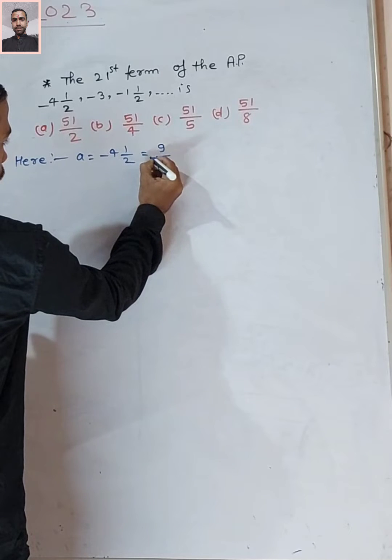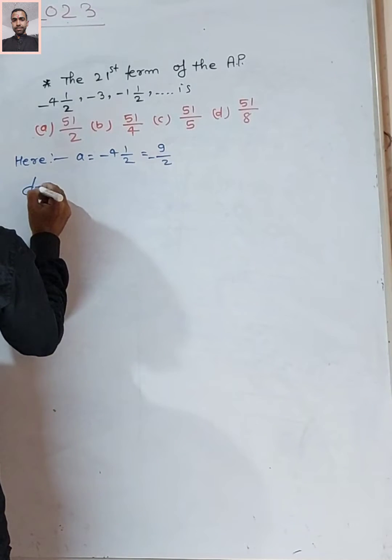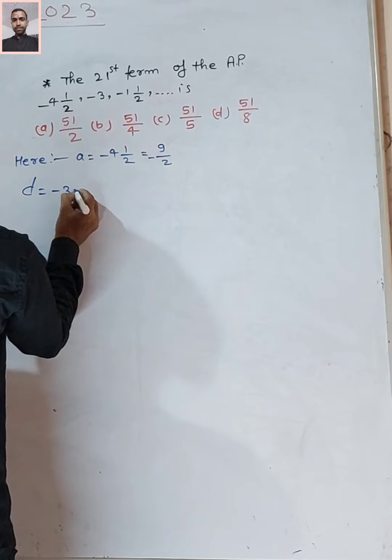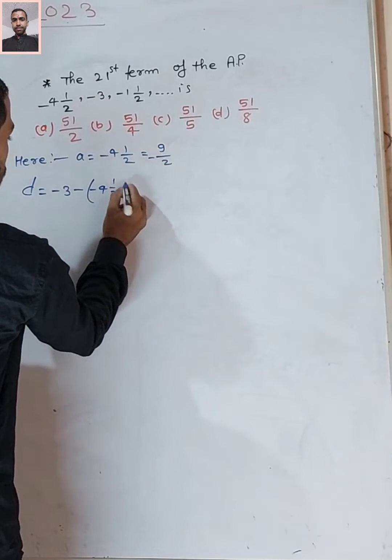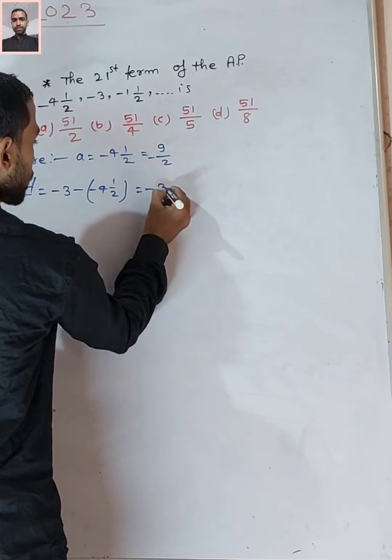The common difference is equal to second term minus first term. So, -3 minus -4½ equals -3